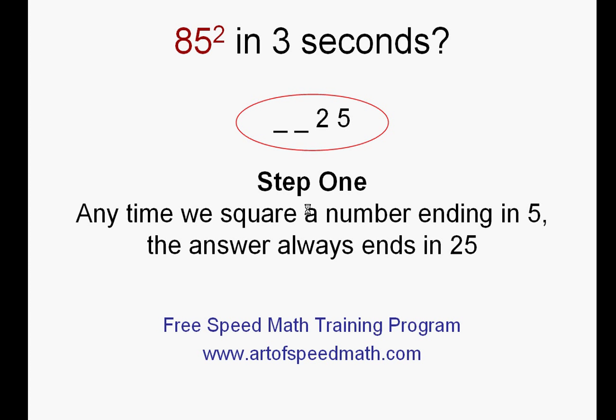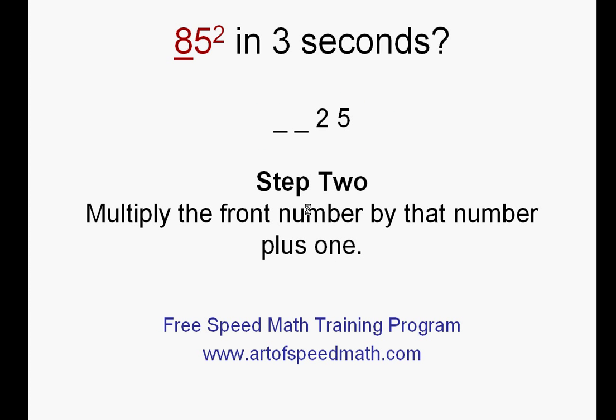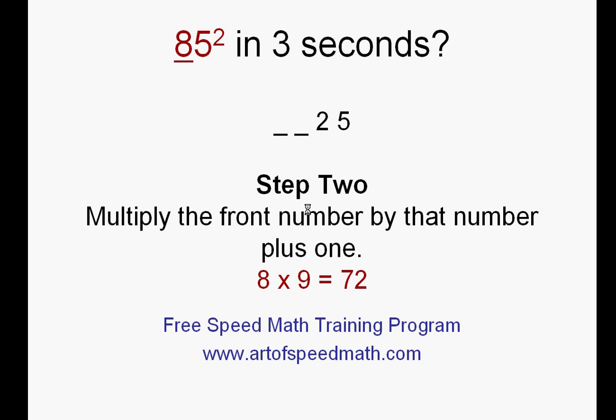So straight away we put 25 at the end of the answer and all we now need to figure out is the first two numbers. That comes to step two: you multiply the front number in the problem — that is the 8 in 85 squared, you can see I've underlined it — by that number plus one. So you multiply 8 by 9. 8 times 9 is 72, and we put that at the front. So our answer is 7,225. You can do that in under three seconds.